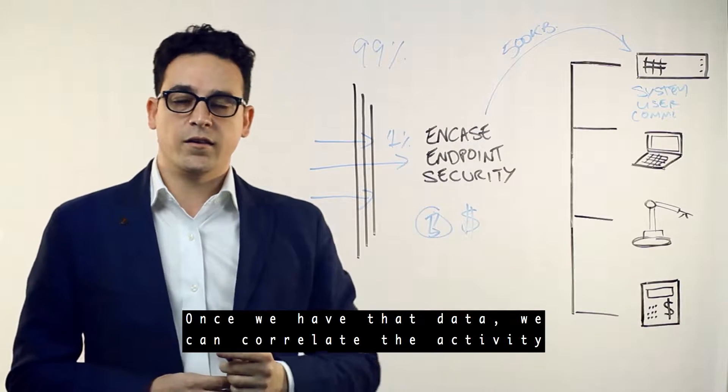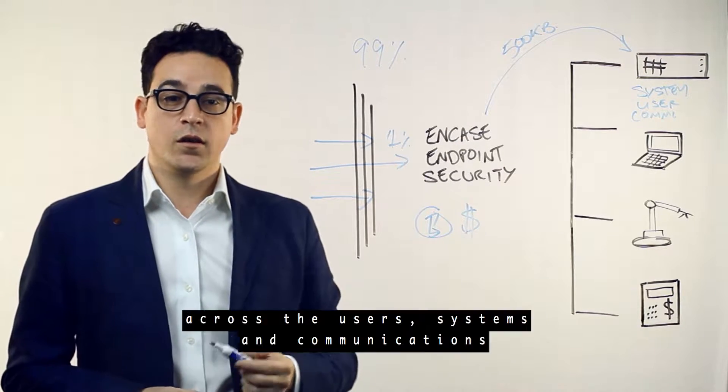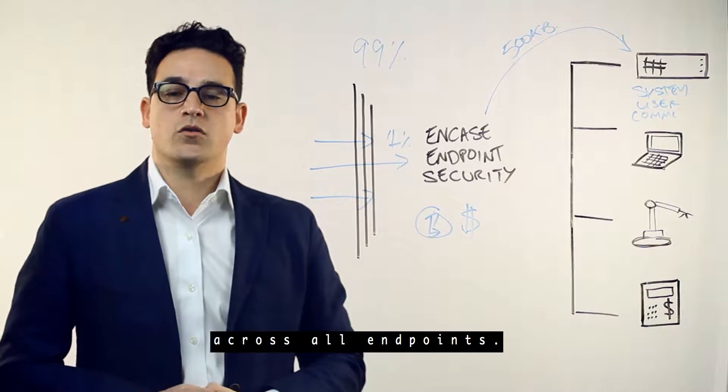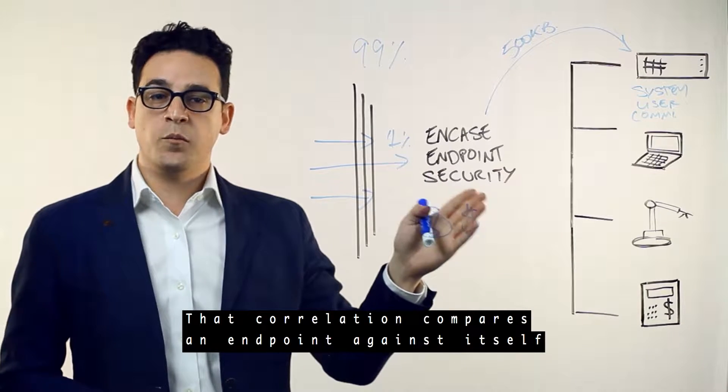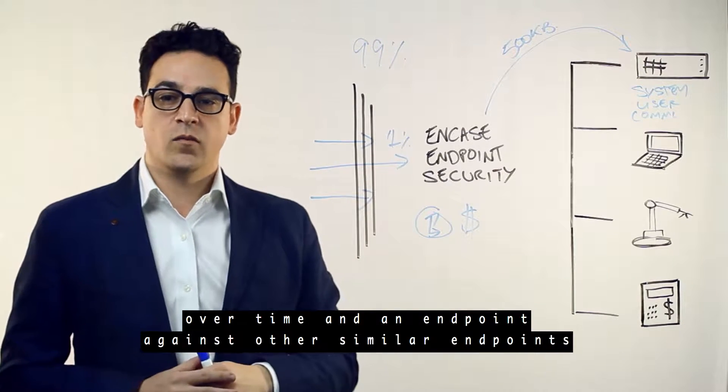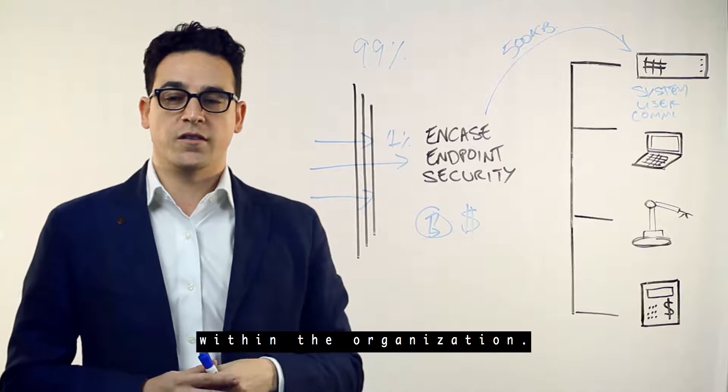Once we have that data, we can correlate the activity across the users, systems, and communications across all endpoints. That correlation compares an endpoint against itself over time and an endpoint against other similar endpoints within the organization.